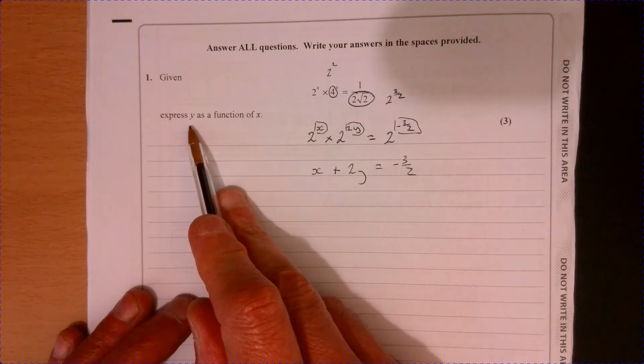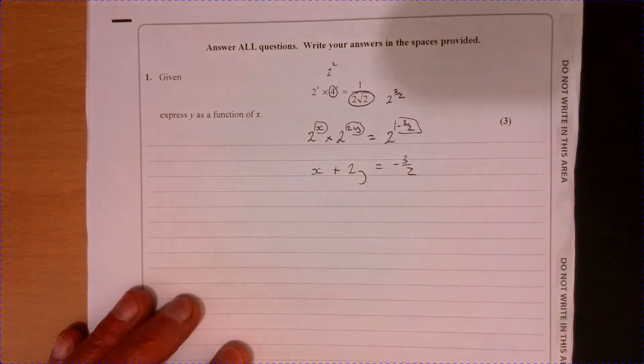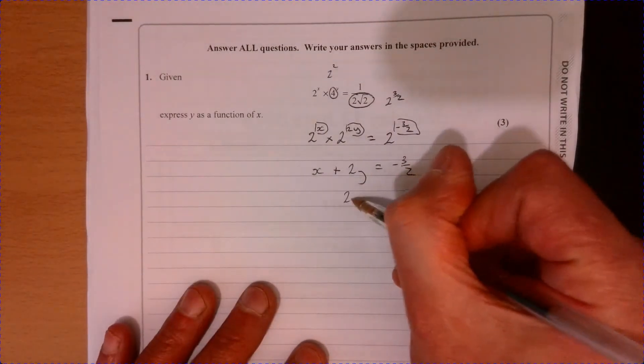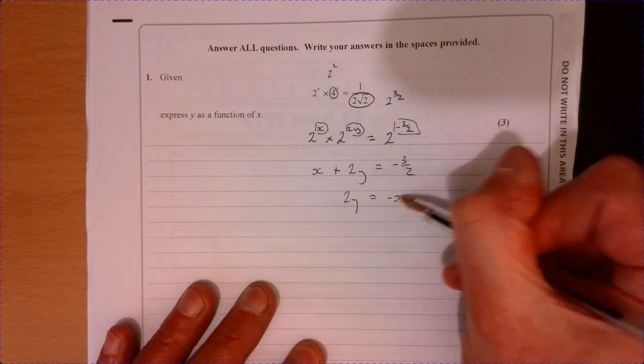So the question just basically means get y equals. So take away x from both sides, and it gives us this.